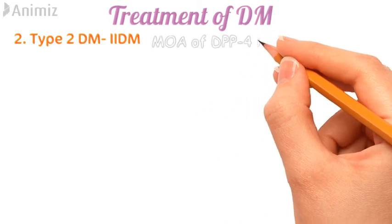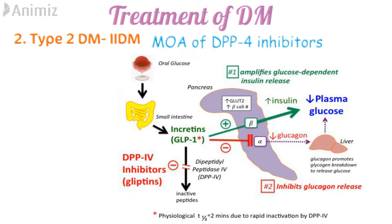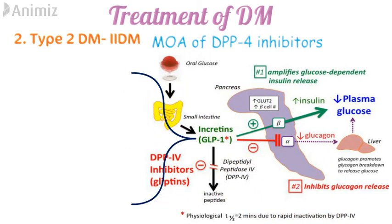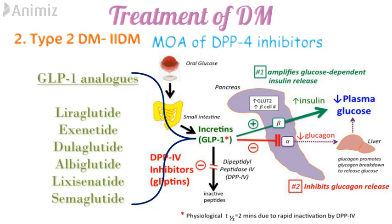Next is the mechanism of action of DPP-4 inhibitors. When we eat food, upon digestion in the small intestine, incretins — or glucagon-like peptide-1 (GLP-1) — are produced, which stimulate insulin secretion and inhibit glucagon secretion. However, these GLP-1 molecules are broken down into inactive peptides by the enzyme DPP-4. DPP-4 inhibitors block this enzyme so that GLP-1 cannot be broken down, thereby increasing insulin secretion. Alternatively, GLP-1 analogues are also given as drugs: liraglutide, exenatide, dulaglutide, albiglutide, lixisenatide, and semaglutide.